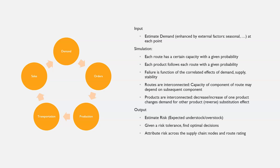The supply chain cycle runs from demand to orders to production, transportation, and sales, and then back to demand. This cycle can be simulated — we can use those flow estimates and the flow data to estimate the dynamics of this cycle.